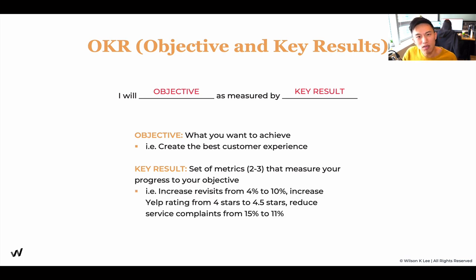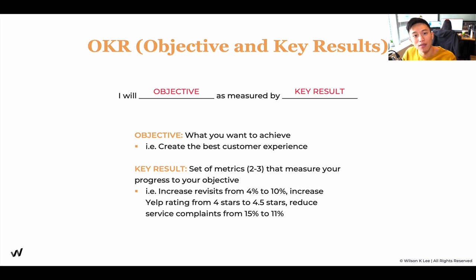Some example metrics: I'm going to increase my revisits from 4% to 10%, because if I have the best customer experience, people will come back again and again — that's a clear indicator of good customer service. Next up is Yelp rating: my current rating is at four and I'm going to increase that to 4.5. Same thing with service complaints: we're going to decrease that from 15% to 11%. These are just examples of metrics; it really depends on what objectives you have, and the key results follow.